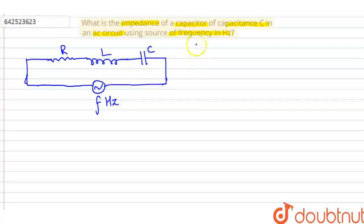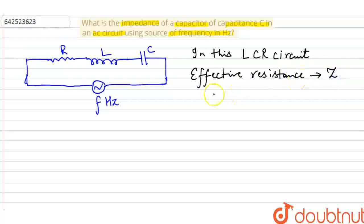In this LCR circuit, I can find the effective resistance of this circuit which is represented by Z. So this Z is called impedance. Here I am writing the formula for the impedance: Z equals square root of R squared plus XL minus XC whole square, where XL is the inductive reactance and XC is the capacitive reactance.